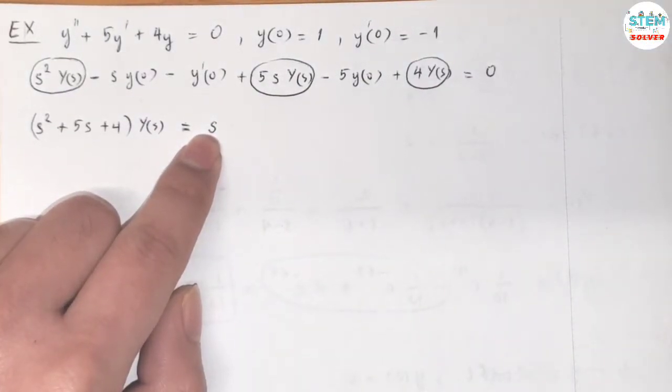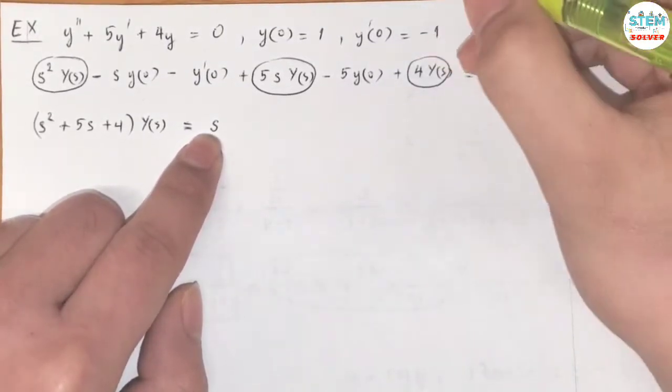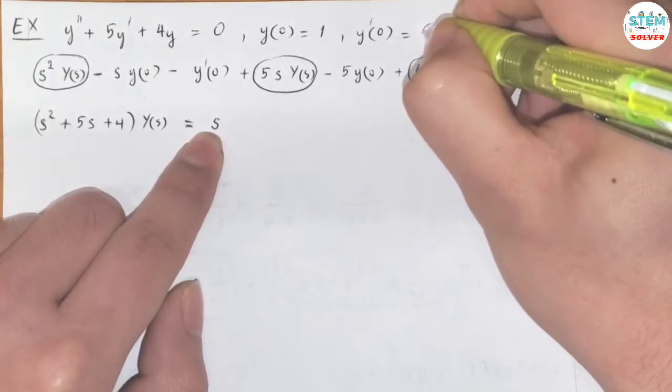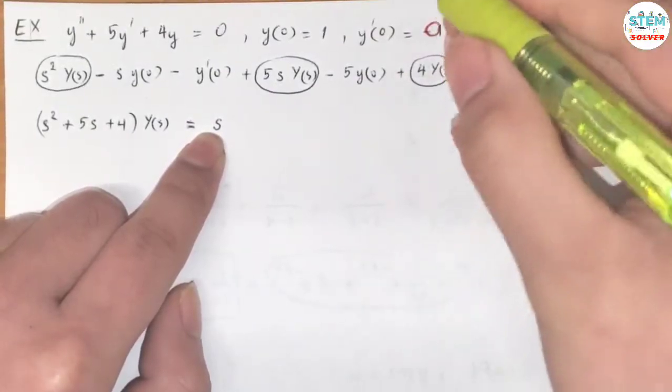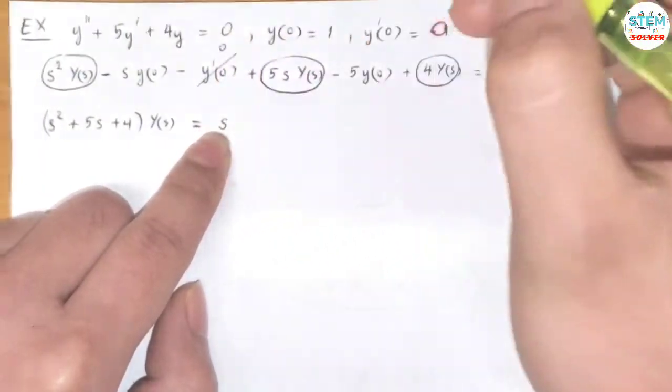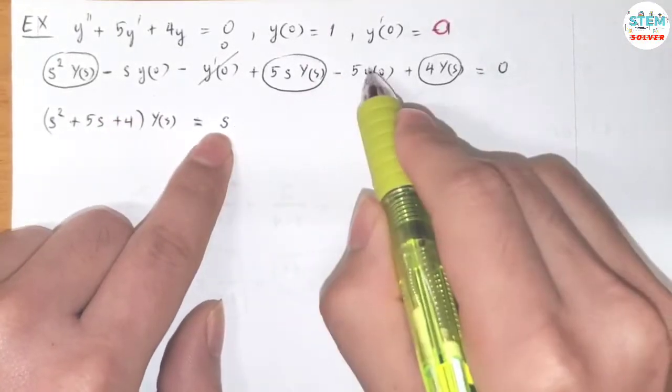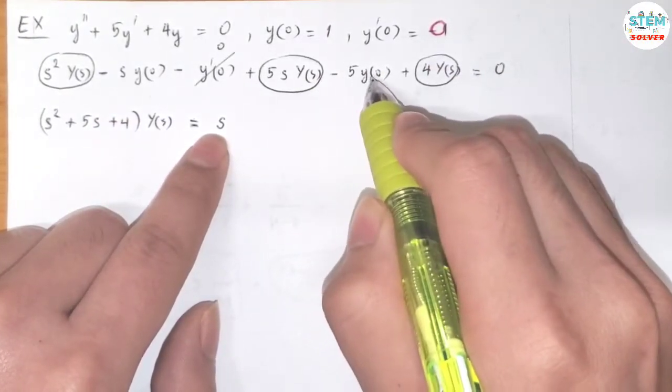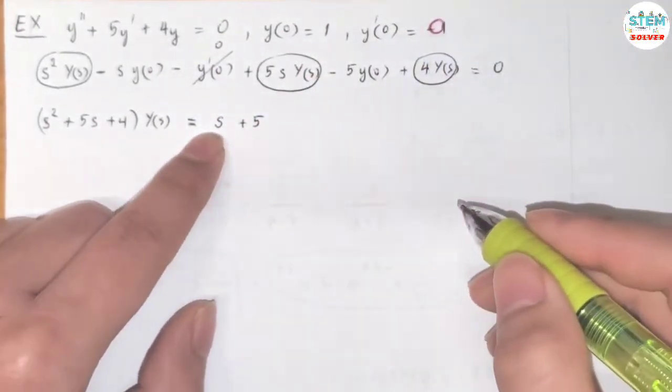Sorry guys, I just realized I have written down the problem incorrectly. Y'(0) is equal to 0. So we ignore this because it's just 0. So I still have s, and for this one, y(0) = 1, negative 5 times 1 is negative 5, move to the other side I have positive 5. So it should be good now.